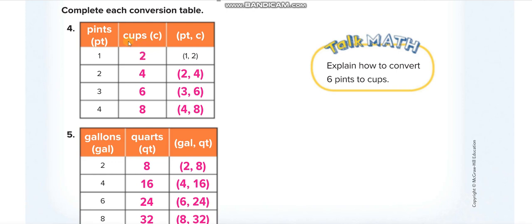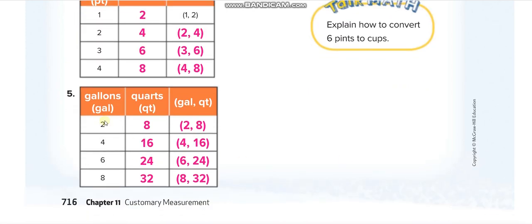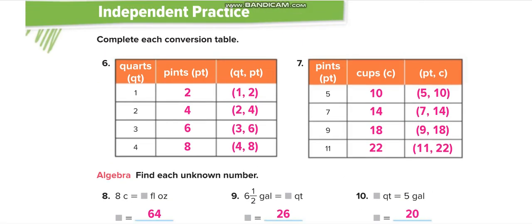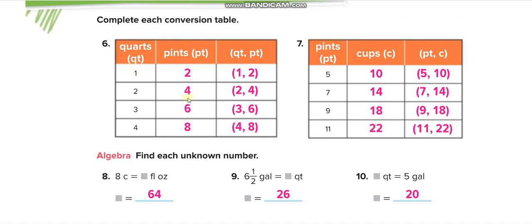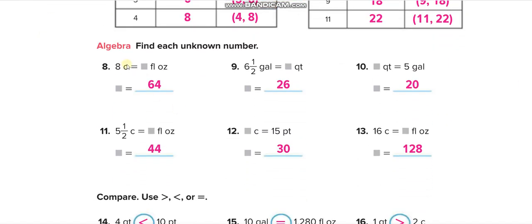They are making a table: one pint equals two cups, two pints equals four cups, three pints equals six cups, four pints equals eight cups — writing the pints first and cups second. For gallons to quarts: one gallon is four quarts, two gallons eight, four gallons sixteen, six gallons twenty-four, eight gallons thirty-two. For quarts to pints: one quart two pints, two quarts four, three six, four eight. For pints to cups: five pints ten cups, seven pints fourteen, nine pints eighteen, eleven pints twenty-two.